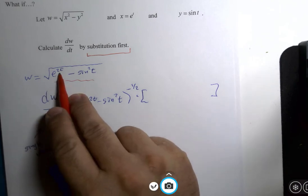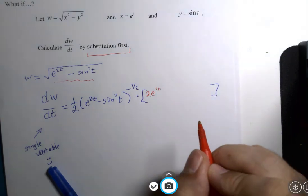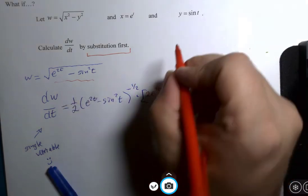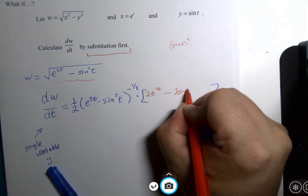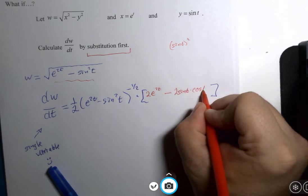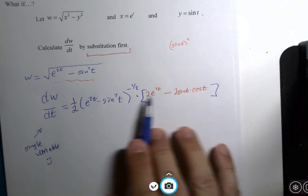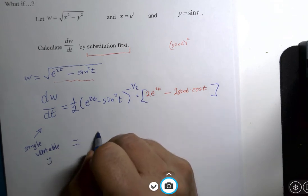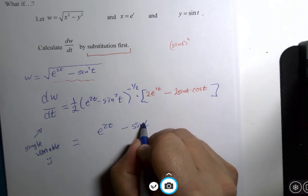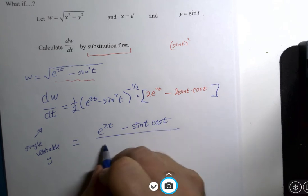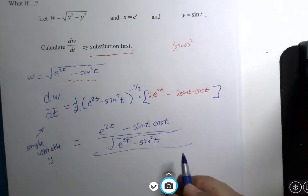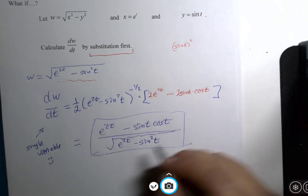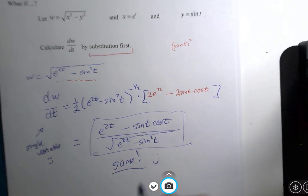So, the derivative of e to the 2t is 2e to the 2t minus the derivative of sine squared. Oh, pause here. That's sine of t squared. So, there's a power rule. 2 times sine of t to the first power with the derivative of sine, which is cosine. And both of these have a factor of 2, which we'll reduce with this nicely. Actually, and I think I get this. Over e to the 2t minus sine squared t. I think this is the same.